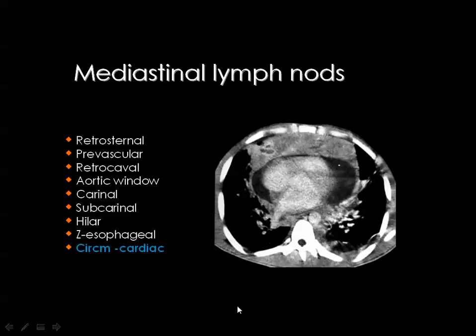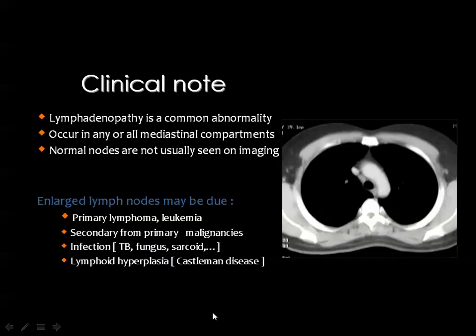The final group is the circumcardiac lymph nodes, which appear on CT as a sheet of soft tissue masses surrounding the heart, especially along its anterior aspect. Pericardial effusion is frequently associated. Most textbooks state that circumcardiac lymph nodes are almost pathognomonic for non-Hodgkin's lymphoma — if you see circumcardiac lymph nodes, suspect non-Hodgkin's lymphoma. This clinical note is very important.